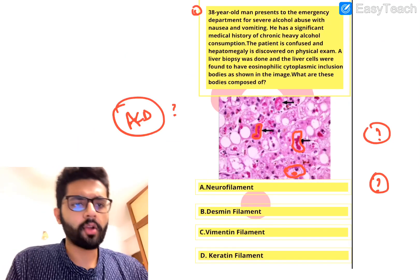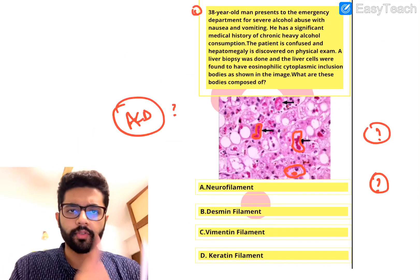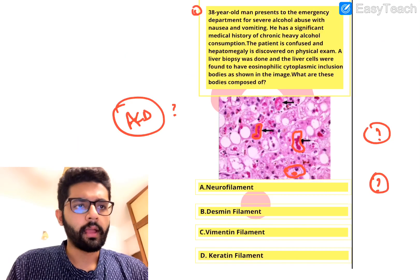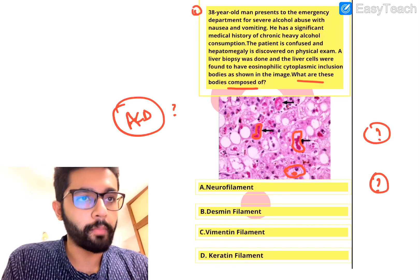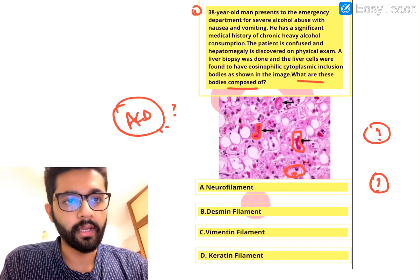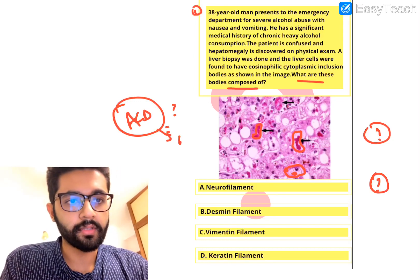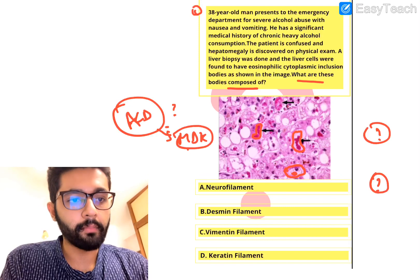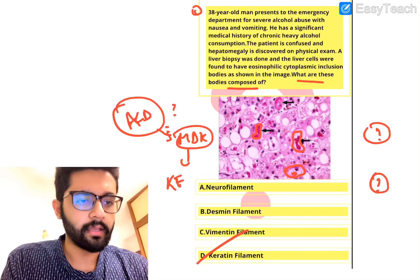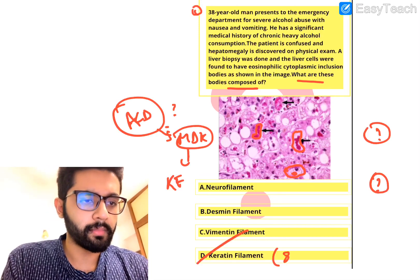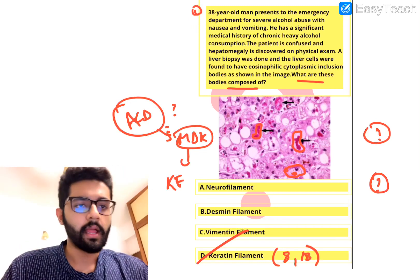Let's answer the question. We established this is ALD, you see Mallory-Denk bodies, and Mallory-Denk bodies are composed of keratin filaments. So the answer is D — keratin filament, mostly keratin filament 8 and 18. The answer is D, keratin filaments.